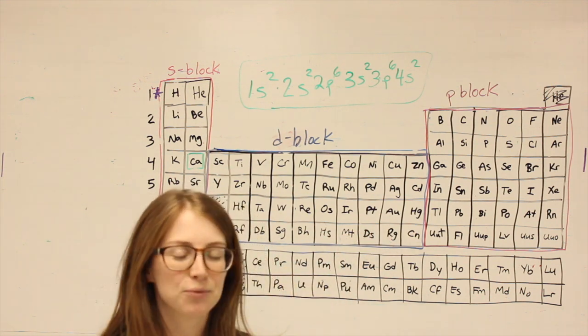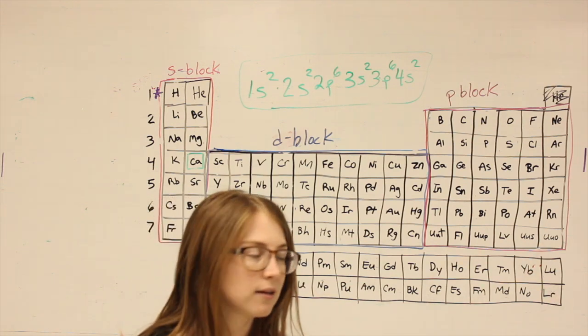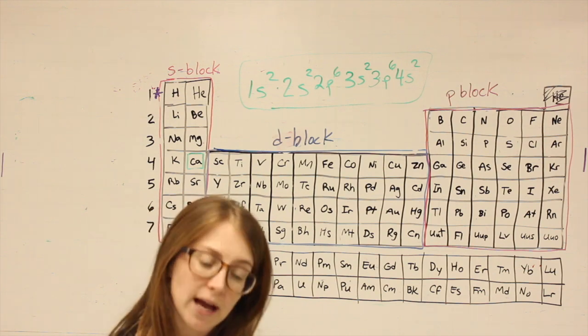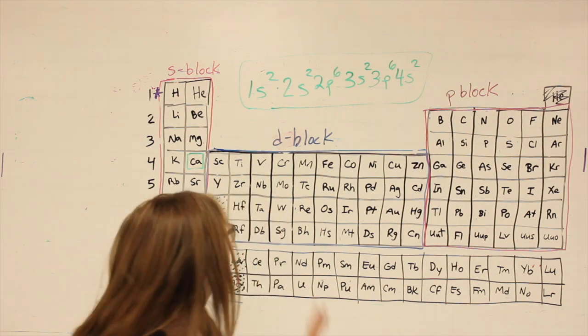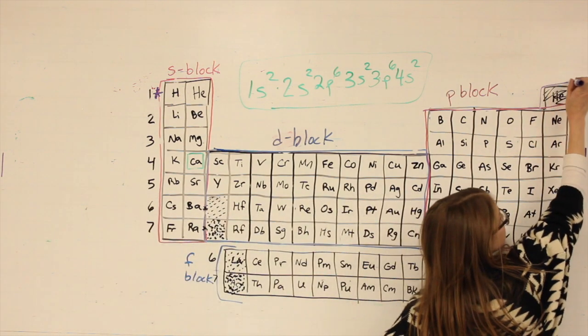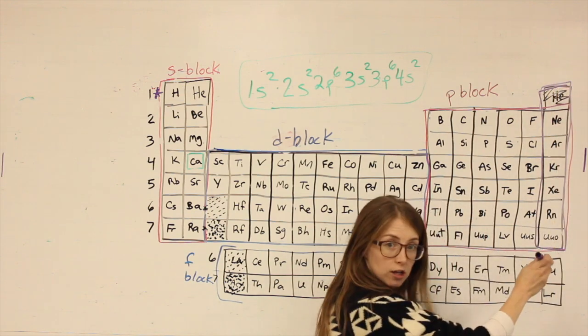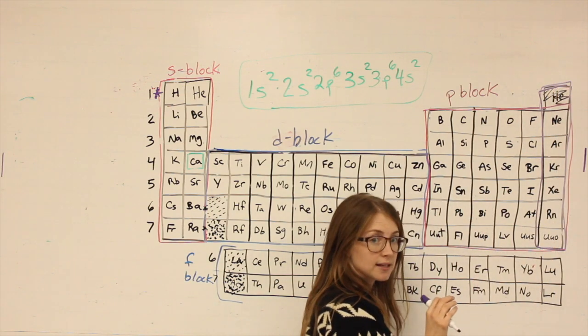So just like in Candyland where if you land on that special square, you can skip a whole bunch of spaces and just keep going. Our noble gas shortcut allows us to, instead of starting at the start, start at any noble gas. So including helium, this last column including helium are our noble gases.